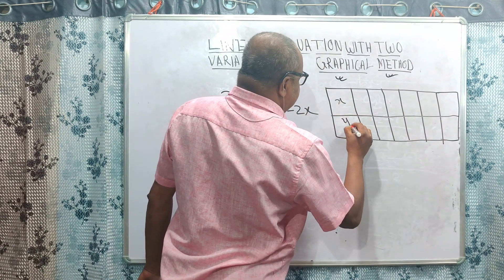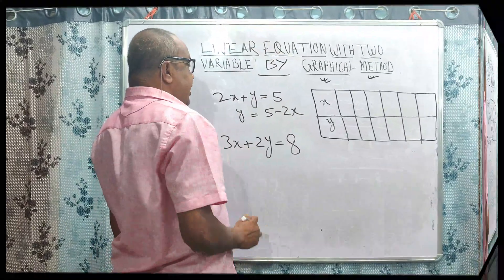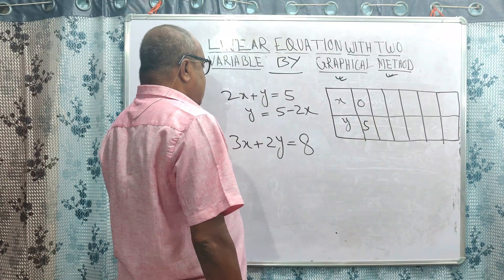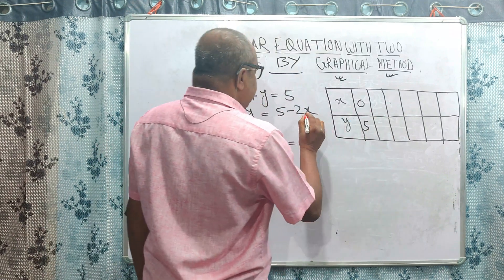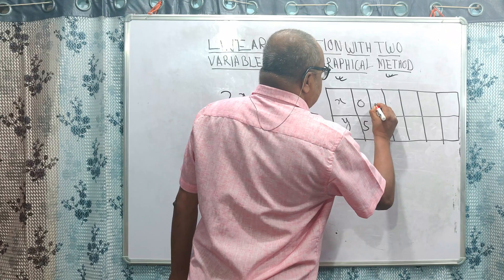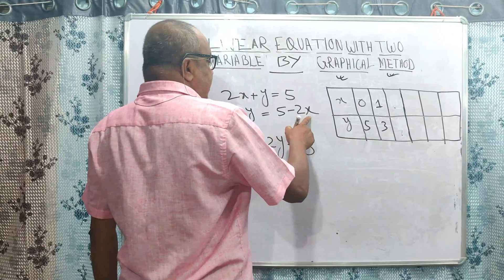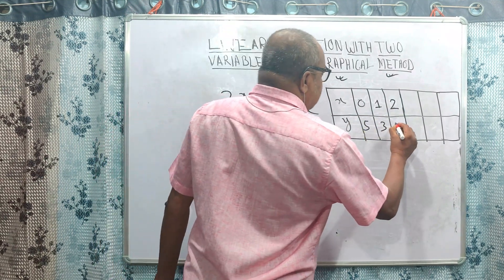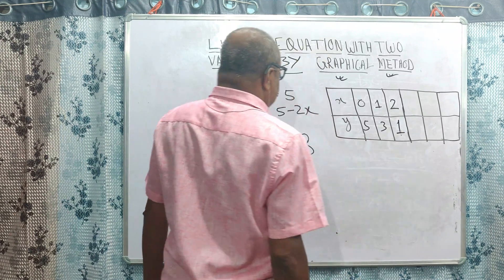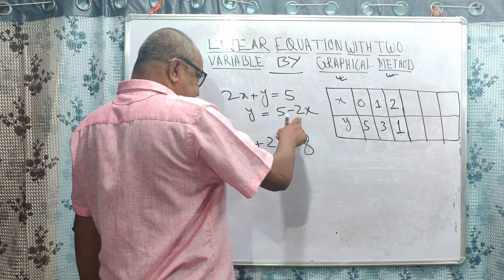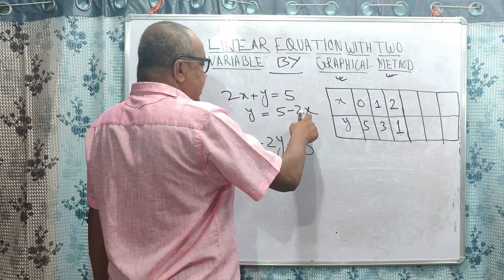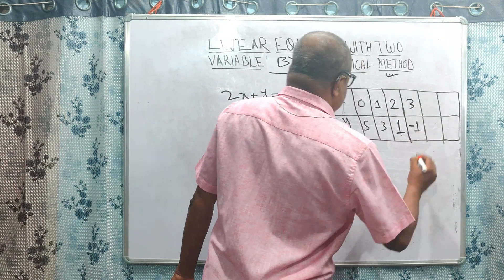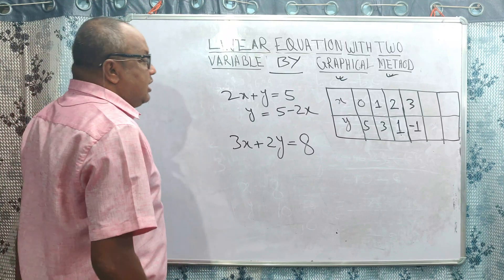For the first equation, the table of values: if x equals 0, then y equals 5. If x equals 1, then 2 into 1 is 2, and 5 minus 2 equals 3, so y equals 3. If x equals 2, then 2 into 2 is 4, and 5 minus 4 equals 1, so y equals 1. If x equals 3, then 2 into 3 is 6, and 5 minus 6 equals minus 1, so y equals minus 1.